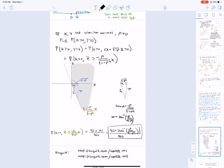Here's another example. So if x and y are standard bivariate normal, rho is greater than 0, we want to find the probability that x is greater than 0 and y is greater than 0. So the trick here is to write y in terms of x and z.